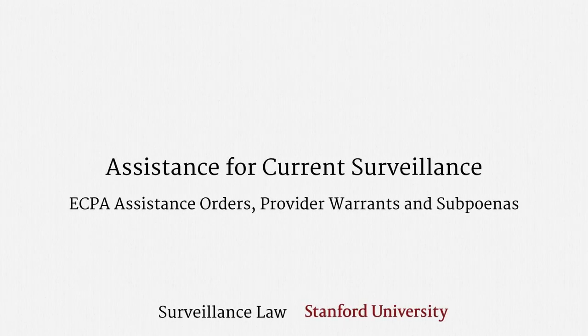This pair of lectures addresses how law enforcement can compel assistance for current surveillance. Put differently, police already have a suspect, and they want to surveil that suspect. Police need some help to carry out the surveillance.